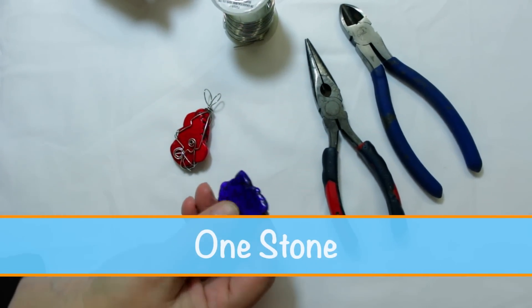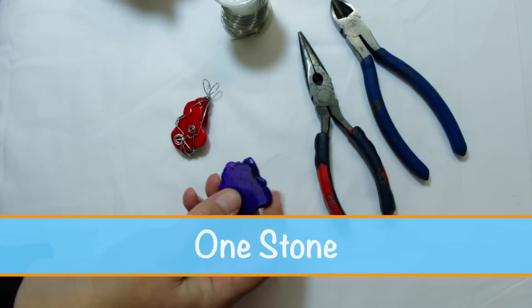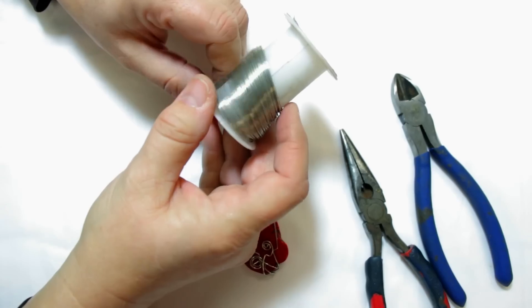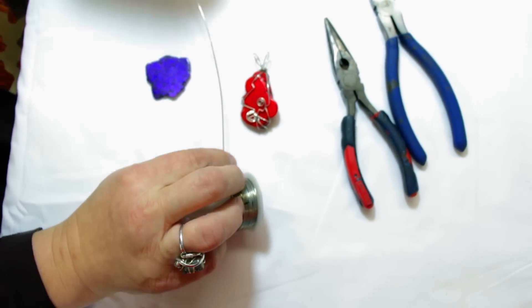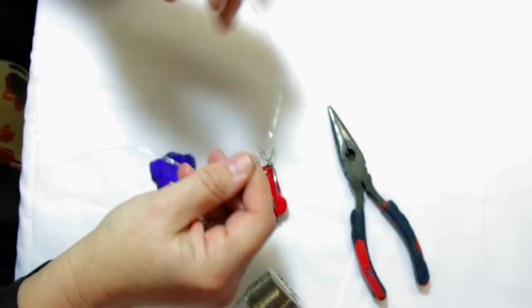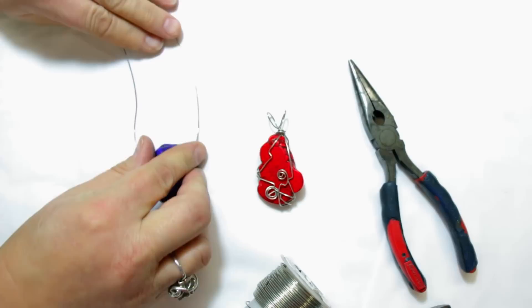And any stone of your choice. I happen to pick a jasper stone, which is uneven, to show you that it does not have to be a smooth stone for this project. To start, you will take your wire and unroll it. And you're going to cut two pieces of wire that are approximately three times the size of your stone doubled.